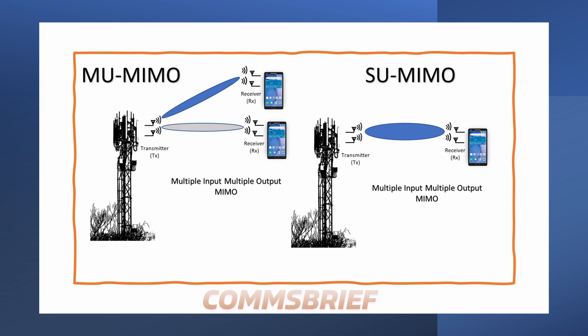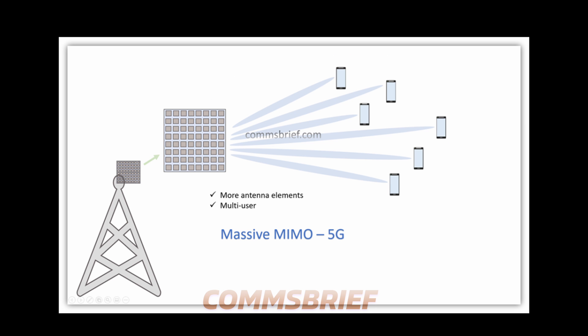Both Multi-User MIMO and Single-User MIMO are used in 4G and 5G mobile networks. There seems to be a misconception that Multi-User MIMO is just a feature of the massive MIMO antenna technology used by 5G networks. But Multi-User MIMO is just a type of MIMO and it can exist in any MIMO variant, including massive MIMO in 5G and the regular MIMO in 4G LTE. Multi-User MIMO is also used by other modern wireless networks including Wi-Fi 6.